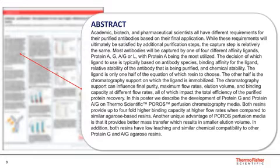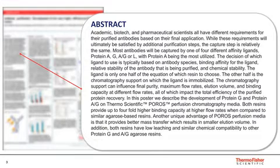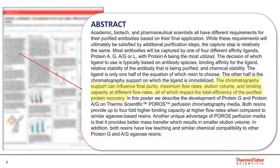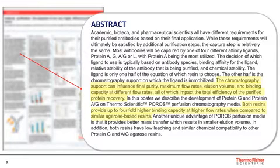Purifications can vastly differ from antibody to antibody. However, the initial capture step can be fairly similar. Most antibodies will be captured by one of four class affinity ligands: Protein A, Protein G, Protein AG, or Protein L. But it's the ligand and the resin combination that truly makes the resin unique. The chromatography support can influence final purity similar to the ligand, but can also influence how you run your purification. The base resin can influence maximum flow rates, elution volumes, and binding capacities, all of which impact the total efficiency of your purification scheme.